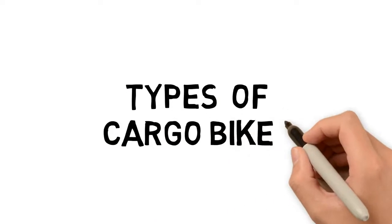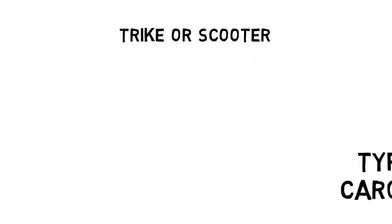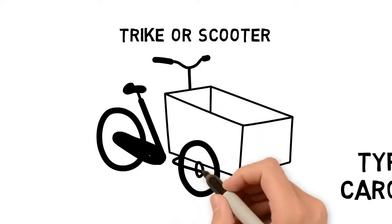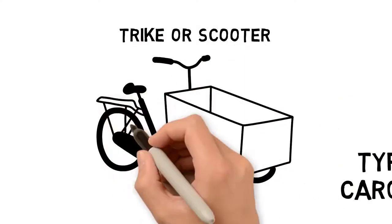There are different types of cargo bikes. The trike, or scooter, which as its name suggests has three wheels. Between the two front wheels it is equipped with a box which often fits up to four children.